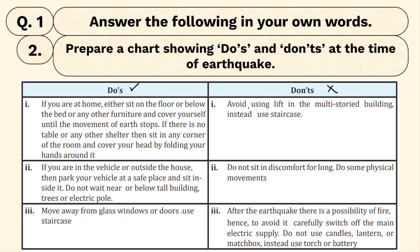Don't — avoid using the lift in a multi-storey building. Multi-storey means buildings with 20, 50 floors. There is a staircase but people prefer the lift for the long distance. So avoid using the lift at the time of earthquake — instead use the staircase.